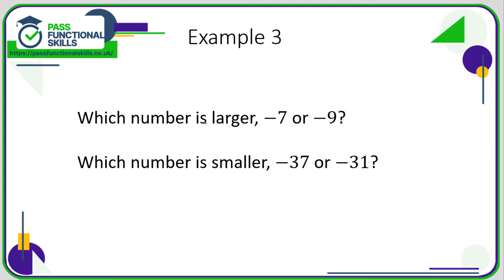Let's take a look at some negative numbers. Which number is larger, -7 or -9? Let's just do a number line here. So here I've got 0, and going in this direction I'm going to have positive 7 and positive 9. So we know we're getting bigger going to the right.